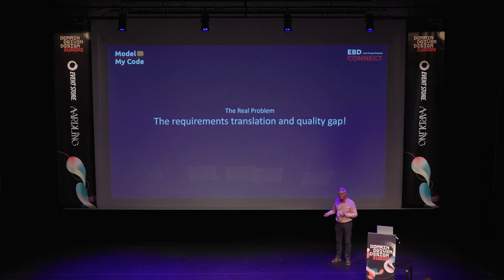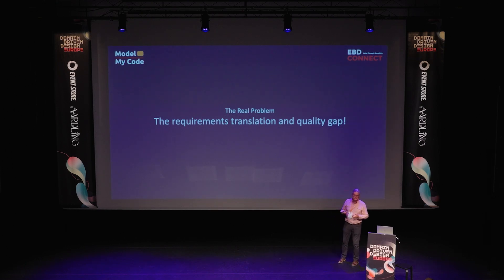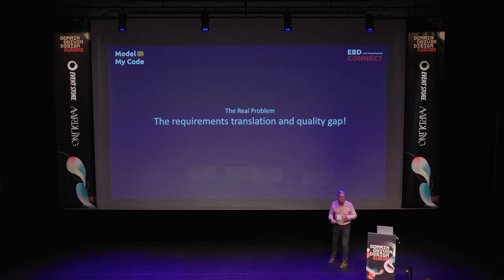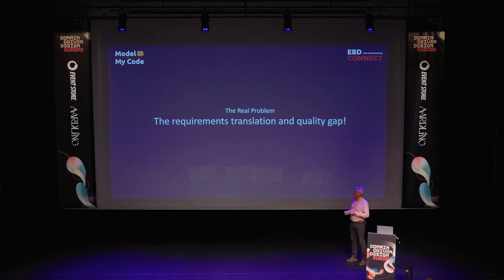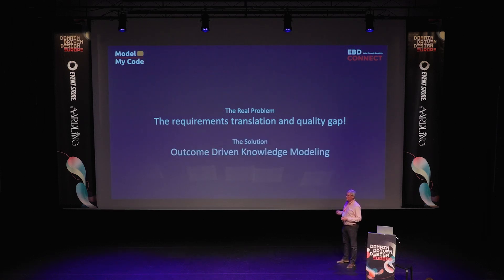And there's a quality problem with the requirements that we're getting. Are we getting all the requirements? Often it's somebody that's halfway through the project who jumps in and says, actually, I also have something to do with this — and you can start refactoring. So why don't we focus on the real problem? That is fixing this requirements translation and quality problem. And the solution, in my opinion, is outcome-driven knowledge modeling.